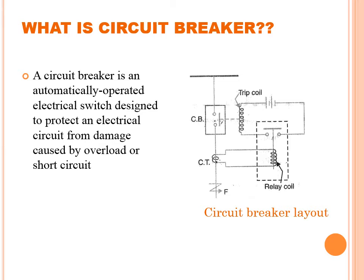A circuit breaker is an automatically operated electrical switch designed to protect an electrical circuit from damage caused by overload or short circuit. The device which makes or breaks the circuit can be called a circuit breaker. Its functional operation is similar to a typical switch.